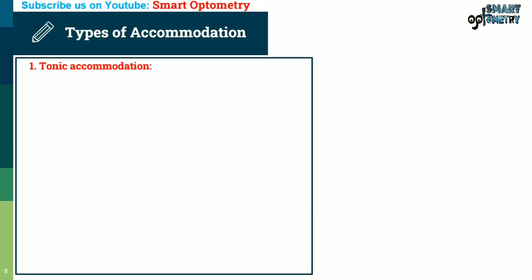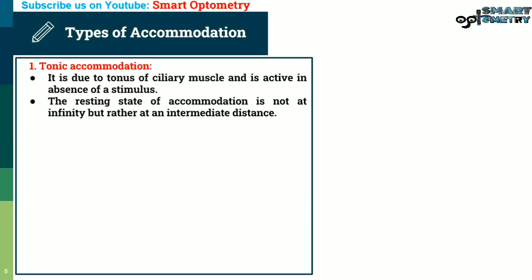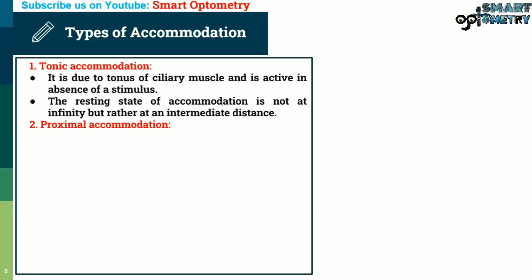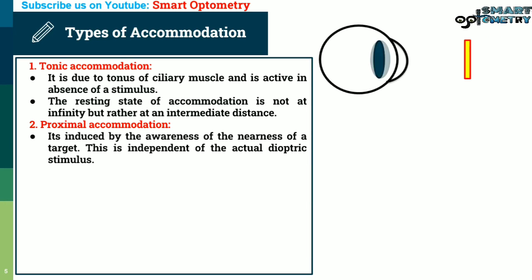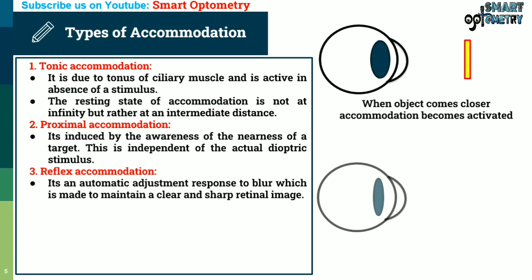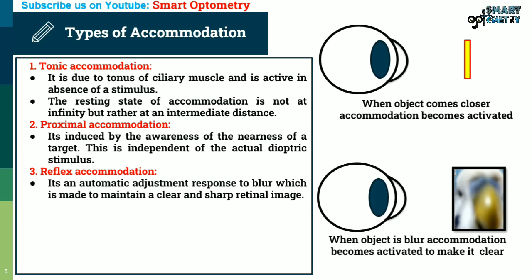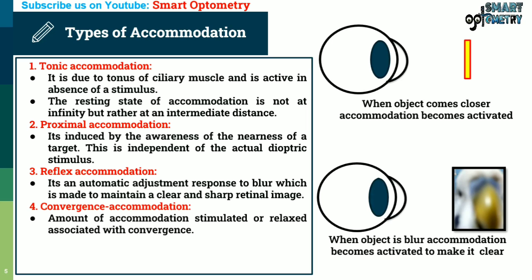Types of accommodation: (1) Tonic accommodation — due to the tonus of ciliary muscles, active in the absence of stimulus; the resting state is at an intermediate distance, not infinity. (2) Proximal accommodation — induced by awareness of the nearness of a target, independent of actual dioptric stimulus. (3) Reflex accommodation — an automatic adjustment response to blur, maintaining a clear and sharp retinal image. (4) Convergence accommodation — the amount of accommodation stimulated or relaxed associated with convergence.